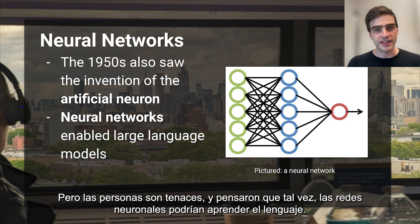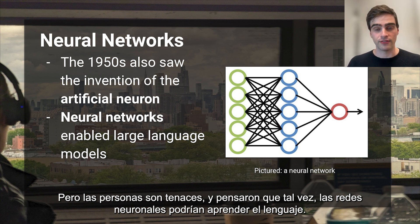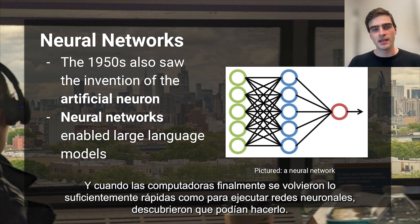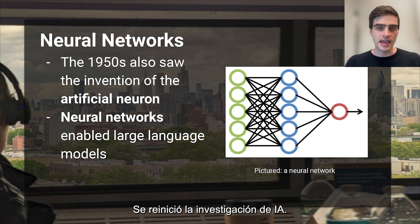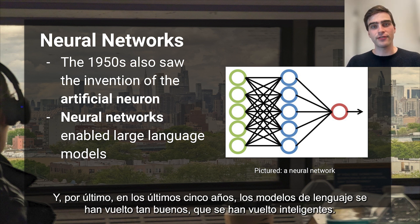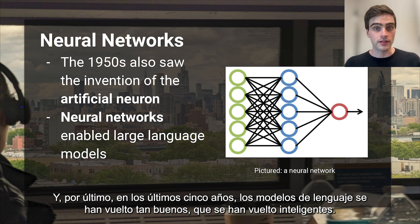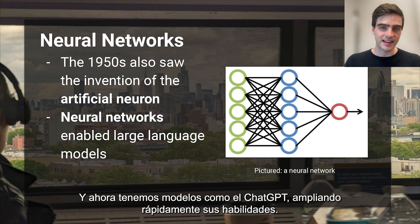But people are tenacious, and they thought maybe neural networks could learn language. And when computers finally became fast enough to run neural networks, they found they could. This was a popular approach in the 2000s. AI research restarted. And finally, in the last five years, language models have become so good they've become intelligent. And now we have models like ChatGPT.